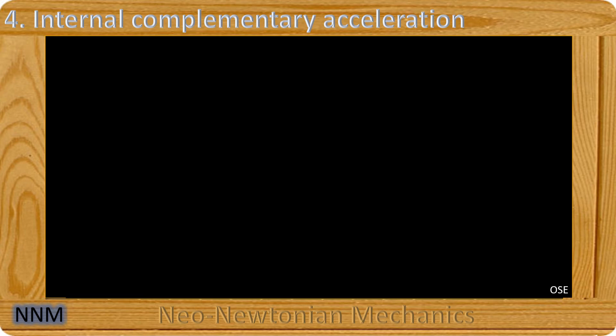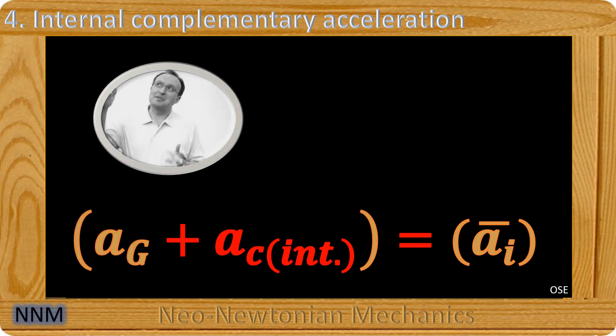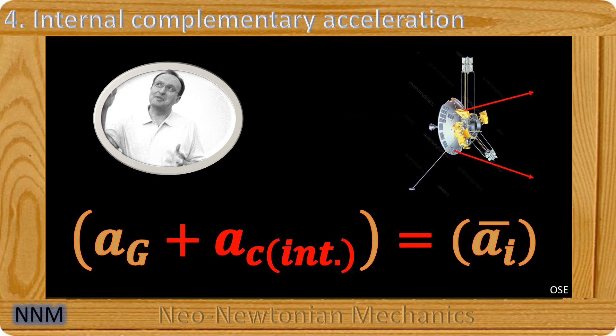Yet another track, there would be a complementary acceleration of internal origin to the probe, which we will call AC, which would explain the difference. It was Slova Turishev, from Professor Anderson's team, who found the clue, a flux of infrared photons emitted from the heat engine and directed forwards which would slow down the probe.